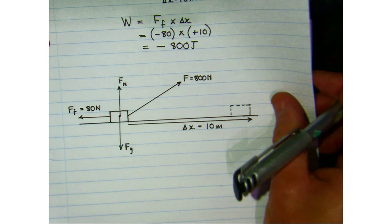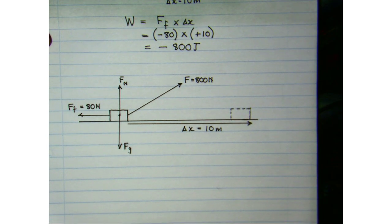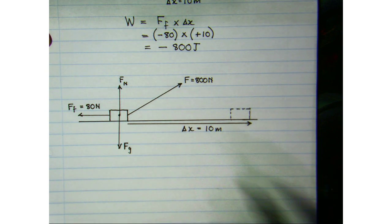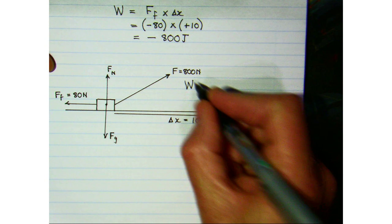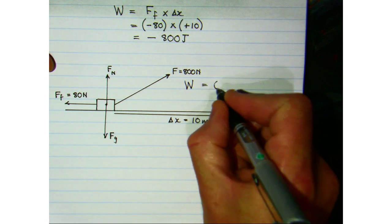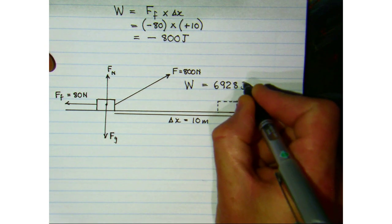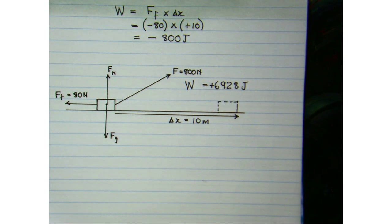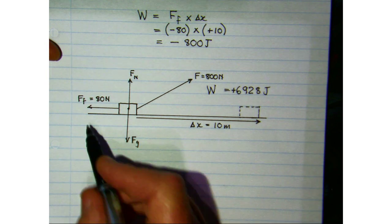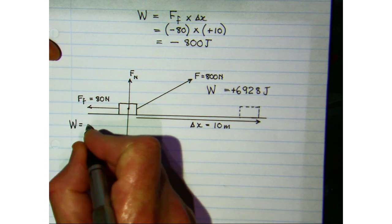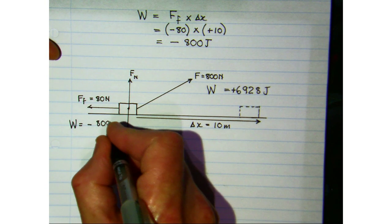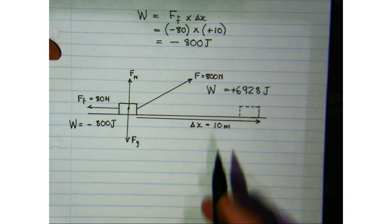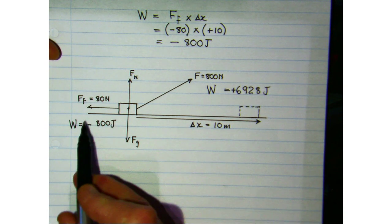Looking at all the forces acting together: the 800 newton angled force did approximately 6928 joules of positive work, adding mechanical energy to the system, while the frictional force did 800 joules of negative work. So we have energy going into and coming out of the system simultaneously.